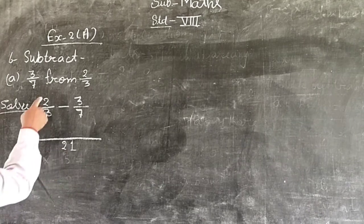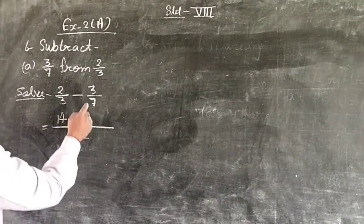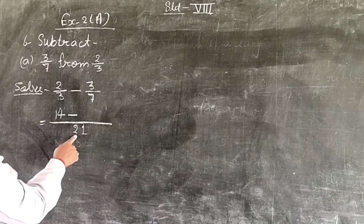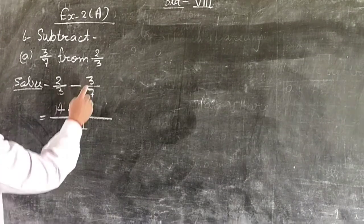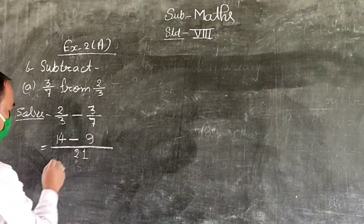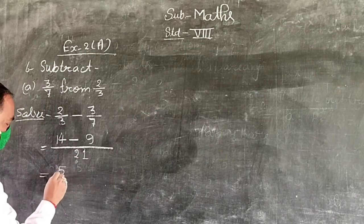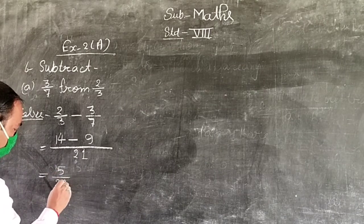7 times 2 equals 14, minus 3 times 3 equals 9. So 14 minus 9 equals 5 upon 21. Answer.